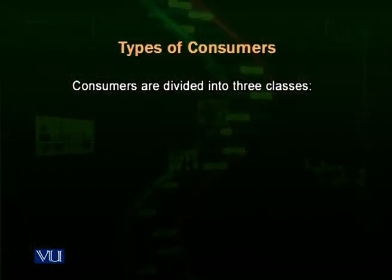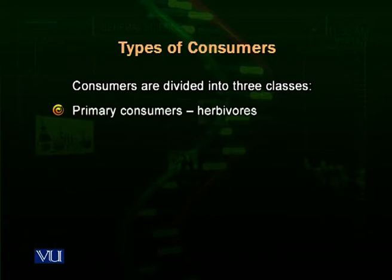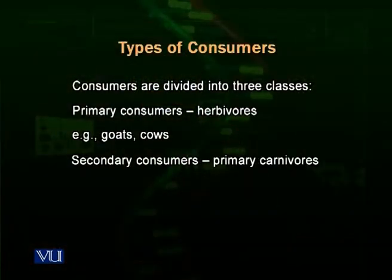Then there are types of consumers. Consumers that are herbivores are plant eaters — for example, goats, sheep, giraffes. Giraffes eat the leaves of very tall plants. Elephants are also herbivores. Some ancient dinosaurs were also herbivores.